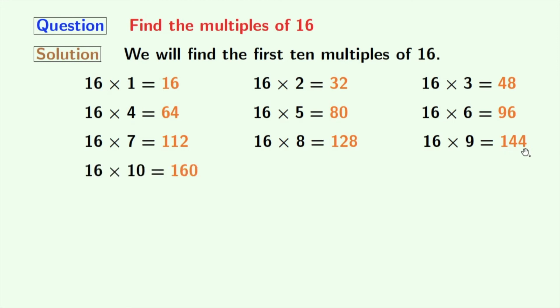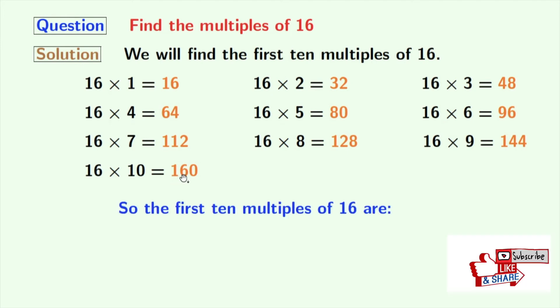And if we multiply 16 with 9, we get 144. And if we multiply 16 with 10, we get 160. So, here are the first 10 multiples of 16, which are the orange ones.